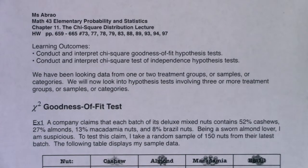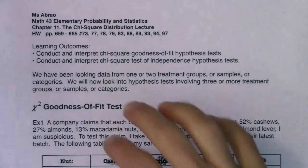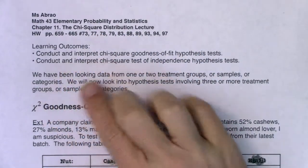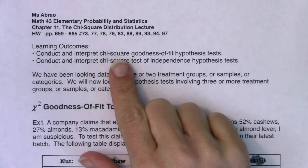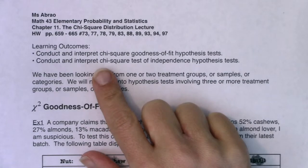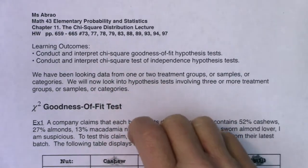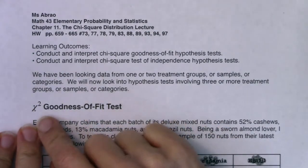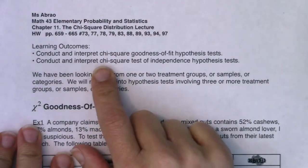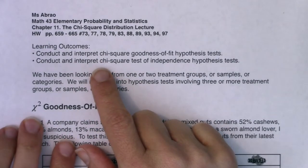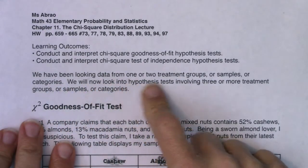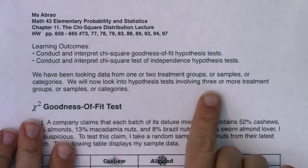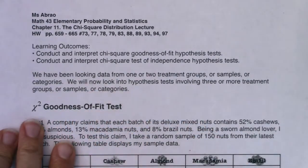Math 43, we're going to start in on Chapter 11. This is the chi-squared distribution chapter. By the end of this chapter, you should be able to conduct and interpret a chi-squared goodness of fit test and a chi-squared test for independence. We're going to pick up two more hypothesis tests called chi-squareds. You're going to see this symbol — it kind of looks like an X, but we say chi. This is the Greek letter chi. We've been looking at data from one or two treatment groups or samples; now we will look at hypothesis tests involving three or more groups or samples.